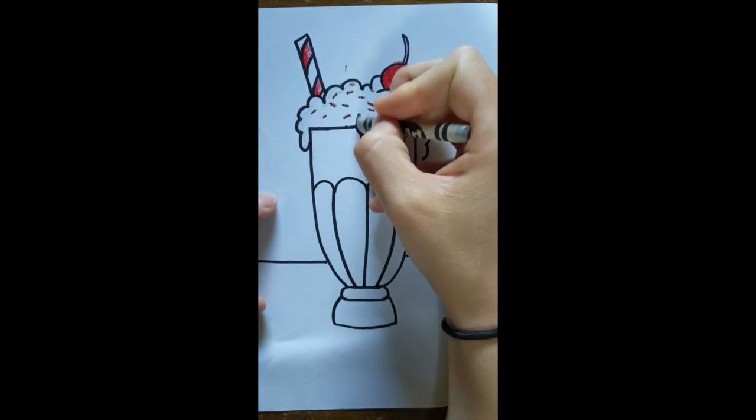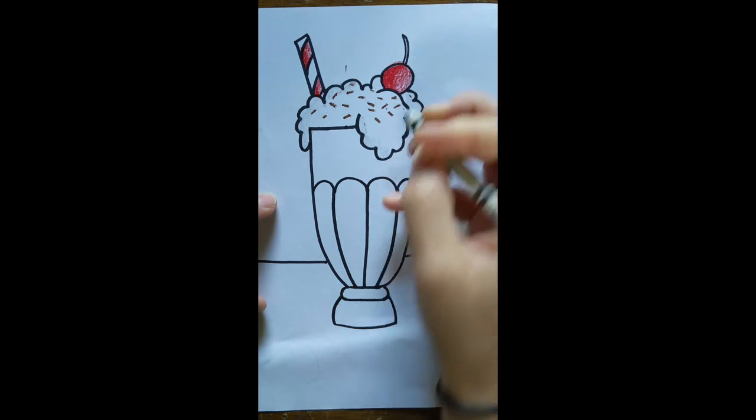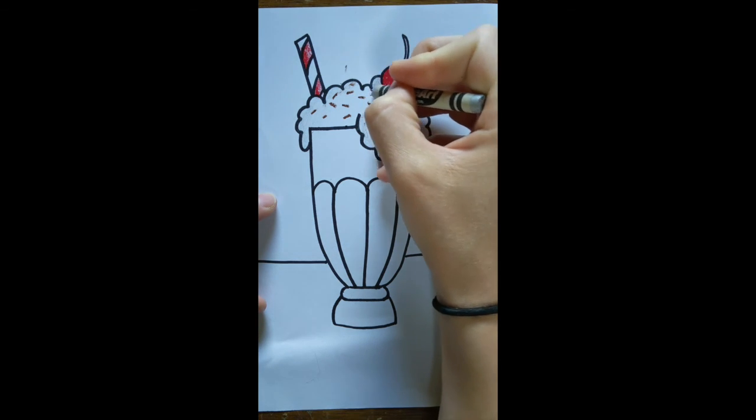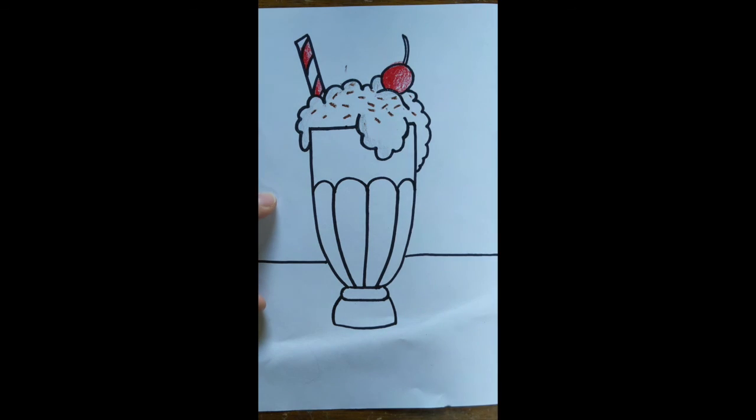Oh, you know what I forgot to do? I forgot to color the stem. A little trick. You can use the back edge of your crayon if you need a sharp corner to color in something skinny. Awesome.